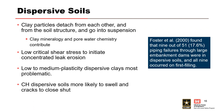Dispersive soils can be especially problematic. Foster et al. 2000 found that 9 out of 51 piping failures through large embankment dams were in dispersive soils, and all 9 occurred on first filling. With dispersive soils, the clay particles detach from each other and from the soil structure and go into suspension upon wetting. Soils with a high exchangeable sodium percentage, such as sodium or calcium montmorillonite present, tend to be dispersive. Kaolinite and related minerals like halloysite are non-dispersive. Dispersivity also depends on pore water chemistry. Low pore water salt concentrations lead to greater dispersivity, and high salt concentrations can suppress dispersion in susceptible soils. As a result, percolation of a saline soil with fresh water can lead to dispersion. The bottom line is dispersive soils will typically have a lower critical shear stress than non-dispersive soils, with low to medium plasticity dispersive clays being the most problematic.